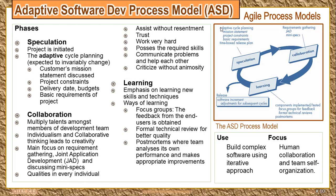A key aspect of the speculation phase is that the cycle is adjusted every time. As a customer, when you are discussing with the development team and find changes happening in the project, the customer's mission statement may change. Due to that, they may offer a little more budget or be ready to extend the delivery date. So all things in the adaptive cycle planning may change as per requirements.